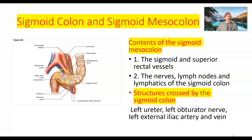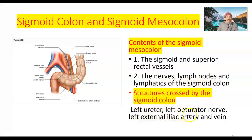The taenia coli ends at the upper end of the rectum here. The contents of the sigmoid mesocolon are the sigmoid and superior rectal vessels. It also contains nerves, lymph nodes, and lymphatics of the sigmoid colon. Structures crossed by the sigmoid colon include the left ureter, left obturator nerve, and left external iliac artery and vein.